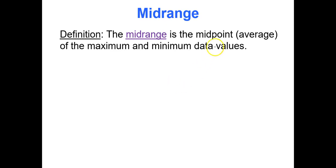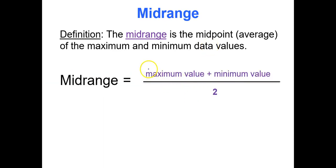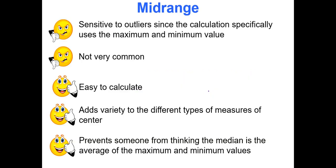The midrange is literally the midpoint of the maximum and minimum data values. The formula is: take the maximum value, add the minimum value, and divide by two. One downfall is that the midrange is sensitive to outliers because it uses only the minimum and maximum values. It's not very common. On the positive side, it is easy to calculate — just two data values, add them up and divide by two. It also adds variety to measures of center and prevents someone from thinking the median is the average of the maximum and minimum values.